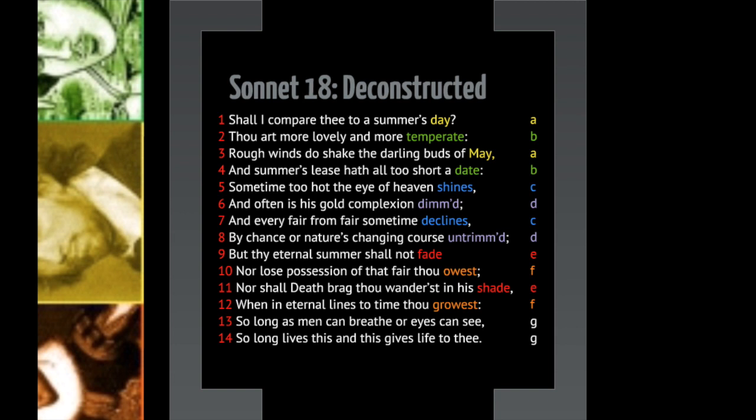Line five: 'Sometime too hot the eye of heaven shines' — it just means it gets really hot outside, maybe 100 degrees. 'And often is his gold complexion dimmed' — we have some personification here. 'His' refers to the sunshine, and often its golden complexion is dimmed, probably by clouds.